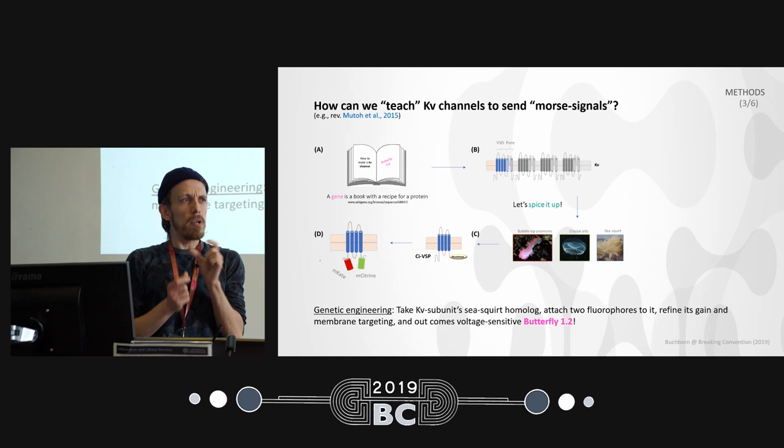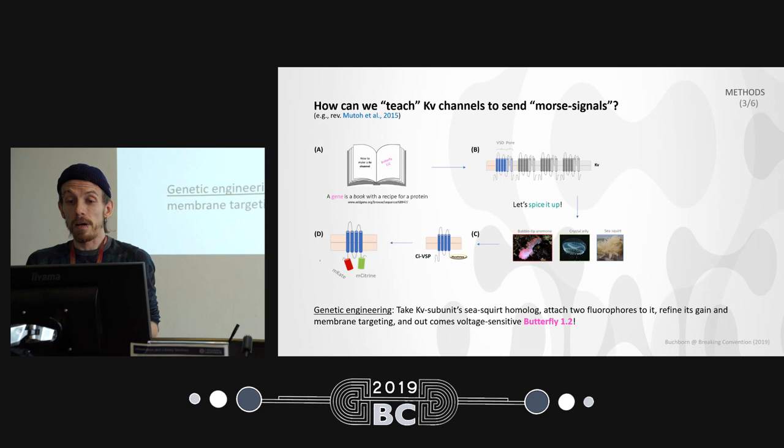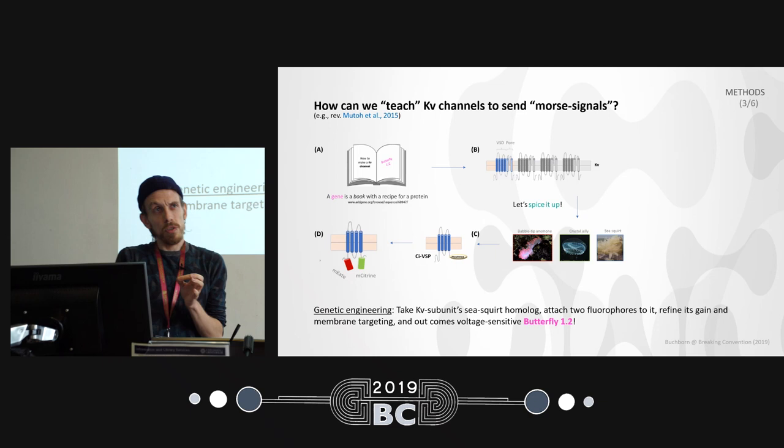How can you do this? The answer is genetic engineering. A gene is basically a book with one recipe — there's one for the serotonin 2A receptor, one for monoamine oxidase, one for the potassium channel. If you want to add features to the potassium channel you just change some chapters in it. This is genetic engineering and this is basically what the Knöpfel lab did.